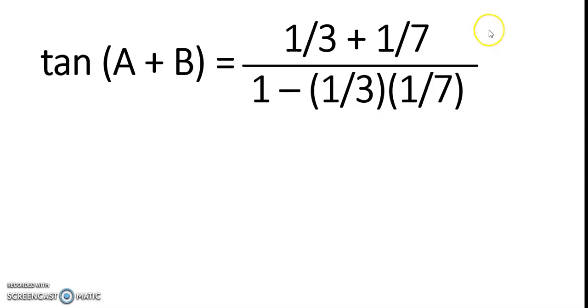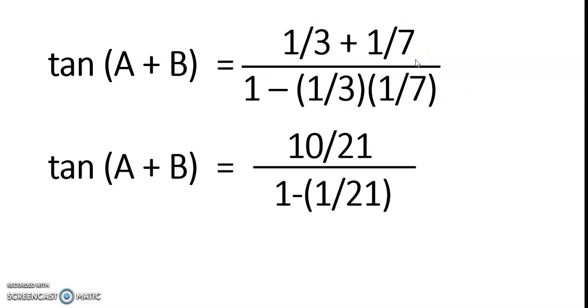1 third plus 1 over 7, that's 10 over 21. And 1 third times 1 over 7, that's 1 over 21.